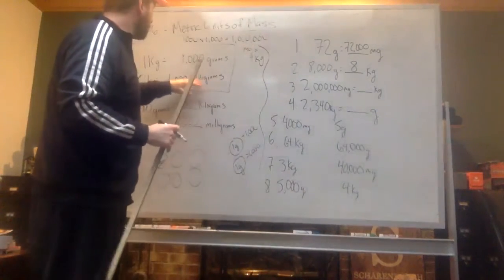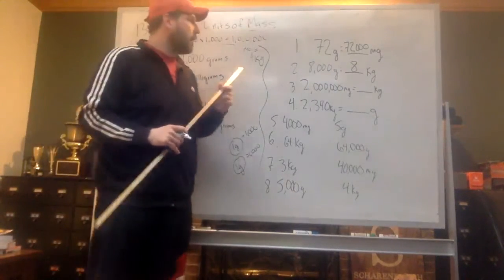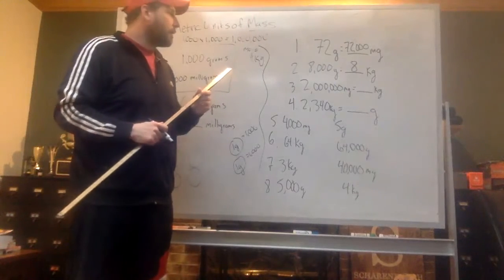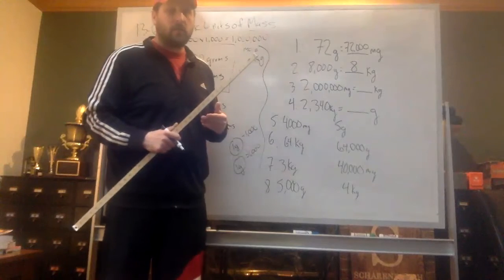and you realize that there is 1,000,000 milligrams in one kilogram. So again, you take that 1,000 times 1,000, and figure out how many milligrams are in a kilogram. And we know that there's 1,000,000 milligrams in one kilogram. So if there's 1,000,000 in one, that means in 2,000,000, there'd be 2.